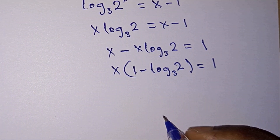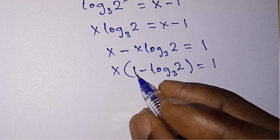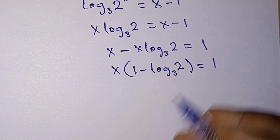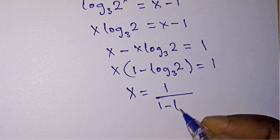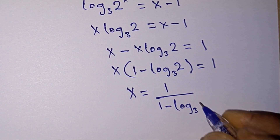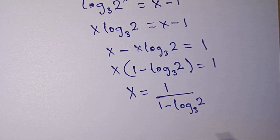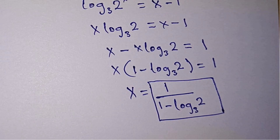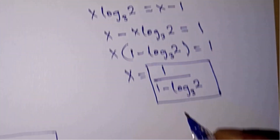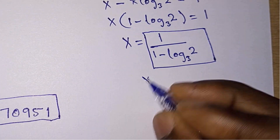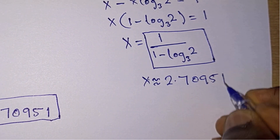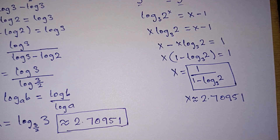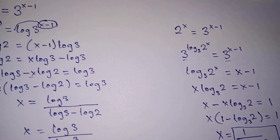We are looking for x, so we divide each side by (1 minus log base 3 of 2), giving x equals 1 divided by (1 minus log_3(2)). This is the final answer for the second approach, and using a calculator you get x approximately equal to 2.7951 — the same result as before. Subscribe to my channel for more videos. Thanks for watching, see you in the next video, take care, bye bye.